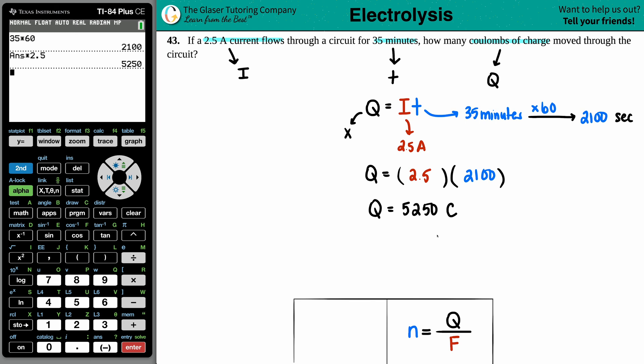But if we want sig figs here, just know that I have two sig figs here, I have two sig figs for 35, so I should have two sig figs here. So I'm just going to round this to 5,300, or you can do 5.3 times 10 to the 3rd coulombs. Whichever one, it doesn't matter.